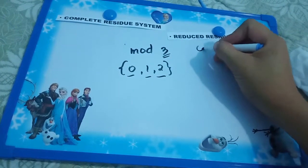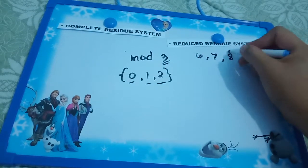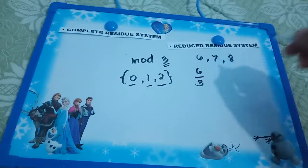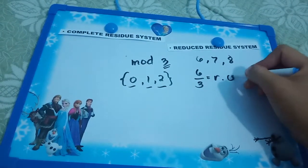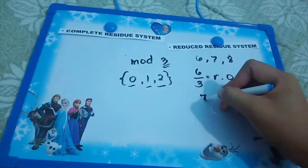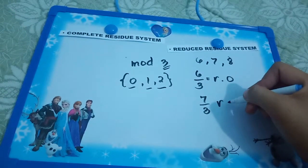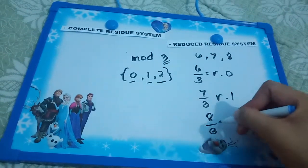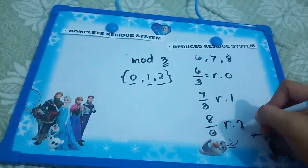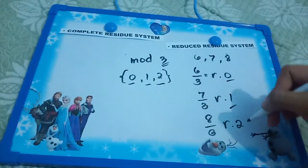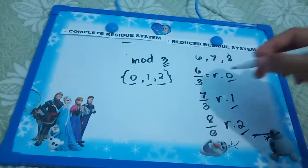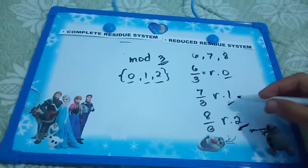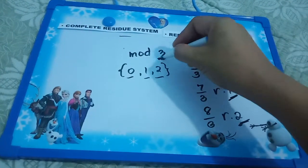For example, when you have 6, 7, and 8: when we divide 6 divided by 3 the remainder will be 0, 7 divided by 3 the remainder is 1, 8 divided by 3 the remainder is 2. So this 0, 1, and 2 are the complete residual system of mod 3 because they are all the possible remainders of an integer.